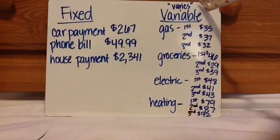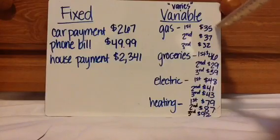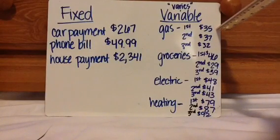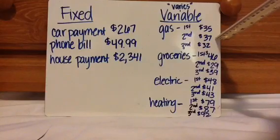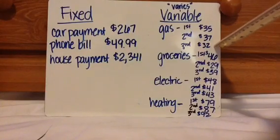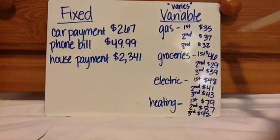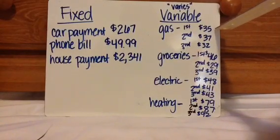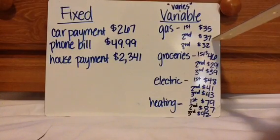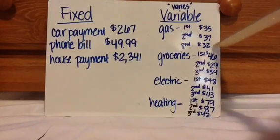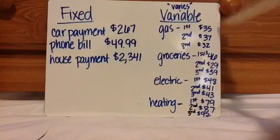Variable expenses vary or change from time to time. Gas for your car could be $35 the first month, but the price of gas could go up to $37 the second month, or down to $32 the third month. It could also be that your need is different — one week you drive more and need more gas, so you pay more; the next week you don't drive as much, so you may not pay as much. It's all based on need and choice.